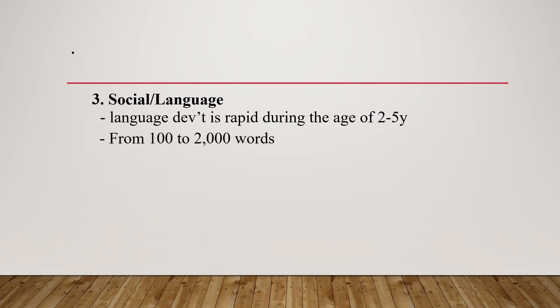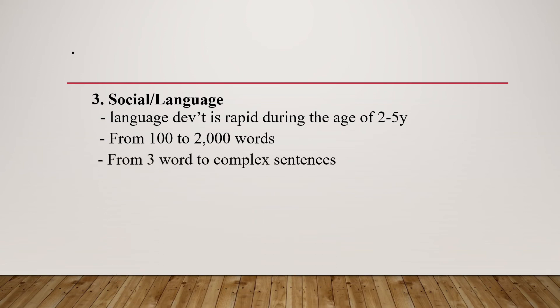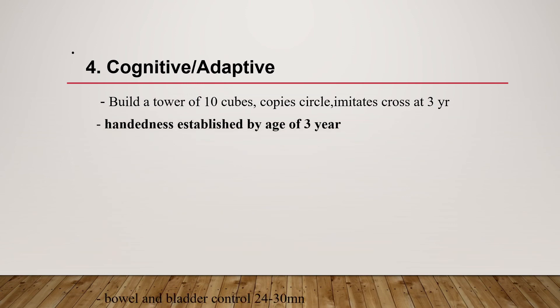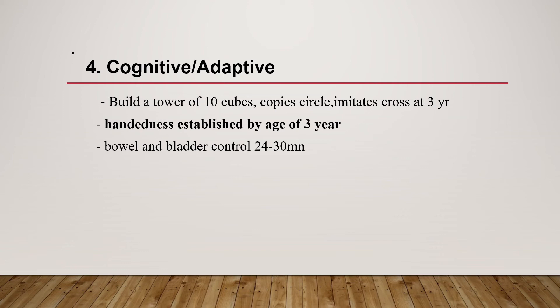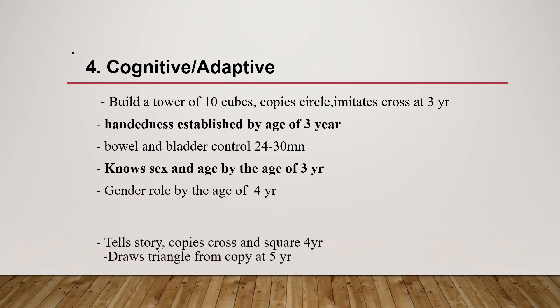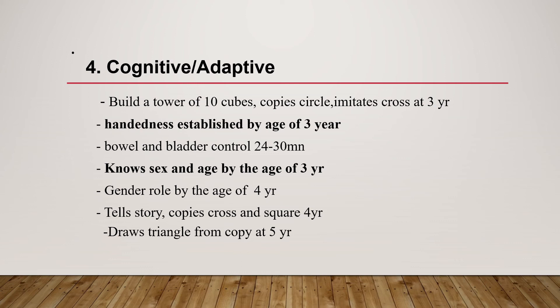Social and language development at preschool age: language development is rapid, and at around five years they know approximately 2000 words and can form three-word sentences. Cognitive development: at three years, they build a tower of 10 cubes and copy a circle. Bowel and bladder control is established by three years. They know their gender and age by three years and their gender role by four years. They copy a cross and a square at four years, and draw a triangle from copy at five years.